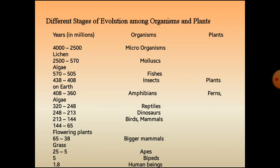From 438 to 408 million years, insects were there and plants on the earth were evolving. From 408 to 360 million years, amphibians were there — amphibians like toads and frogs — and plants like ferns and algae were present.